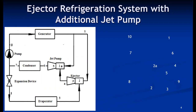The first modification is the ejector refrigeration system with an additional jet pump. If the basic ejector refrigeration system cannot generate the required pressure, we can use multiple ejectors — this is also called a multi-stage ejector refrigeration system, because ejectors are connected in series. This is especially useful when a higher condensing temperature must be maintained, for example with air-cooled condensers in summer where the cooling medium temperature rises and it becomes difficult to maintain a low condensing temperature.